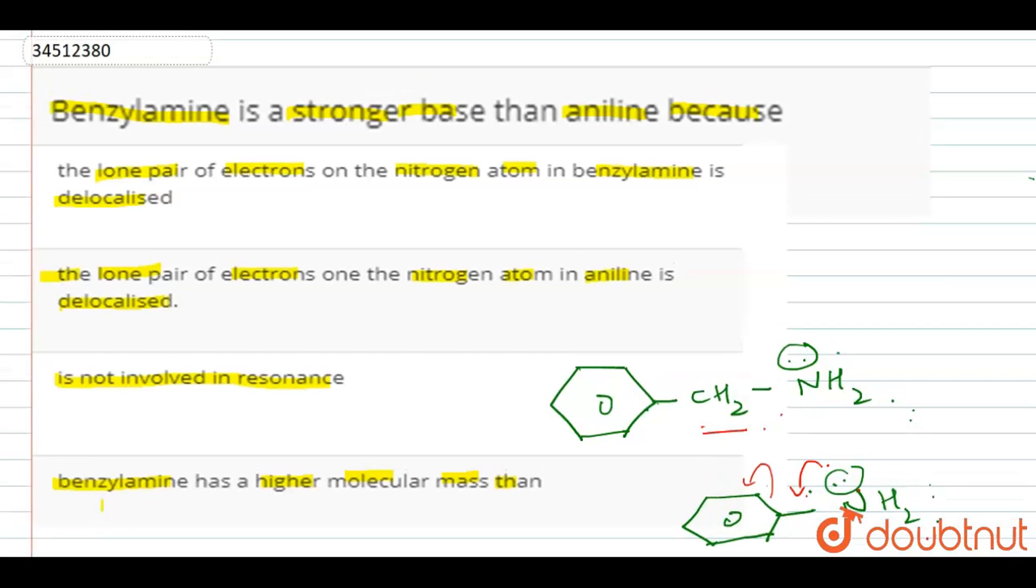So the correct option for this would be: the lone pair of electrons on nitrogen atom in Aniline is delocalized, which is option B. So it is the correct option. Thank you.